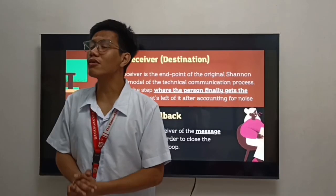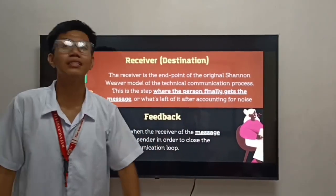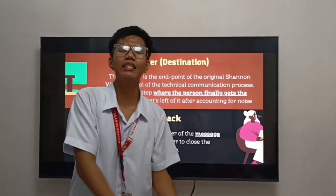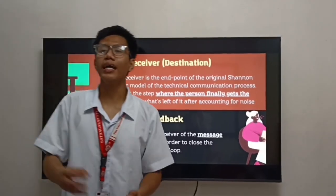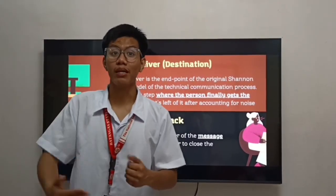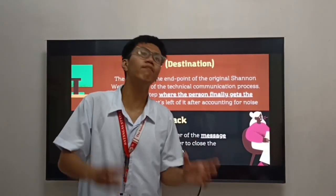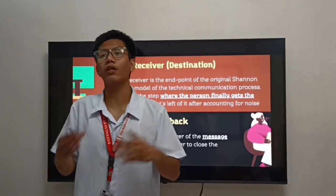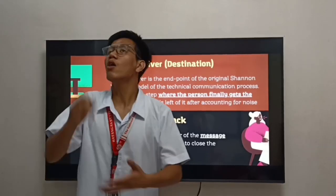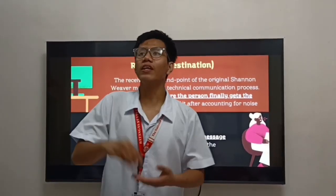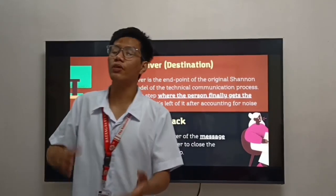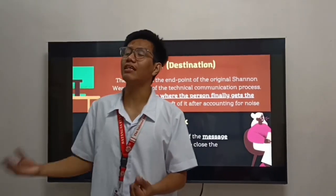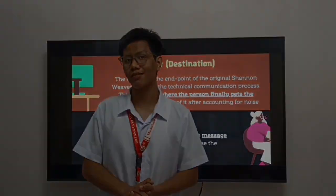Now let's proceed to the final element: feedback. Feedback is the message response or response from the receiver. Through feedback, we determine how well the receiver understood and interpreted the message. We should note that feedback does not occur at all times — for example, when watching TV, we don't let the people on TV know what we're thinking. Feedback does exist when we are chatting with a friend, when we reply to an email, and through body language and facial expressions.